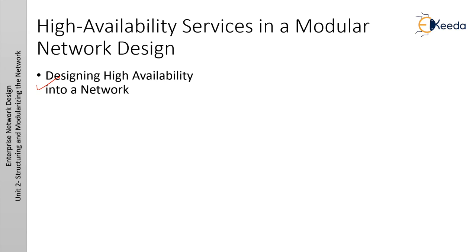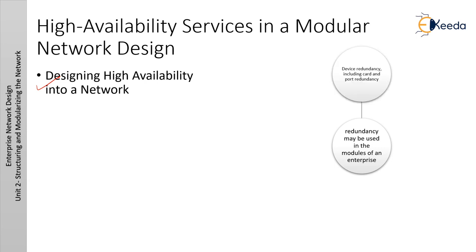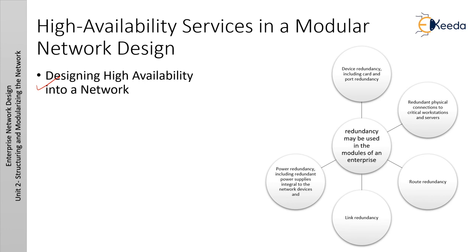Areas where redundancy may be used in enterprise modules include: device redundancy (card and port redundancy), redundant physical connections to critical workstations and servers, route redundancy, link redundancy, and power redundancy (including redundant power supplies integral to network devices and redundant power to the building physical plant). The key requirement is that redundancy provides alternative paths for mission-critical applications. Simply making the backbone fault-tolerant does not ensure high availability — if communication on a local segment is disrupted, that information will not reach the backbone end-to-end. High availability is possible only when redundancy is deployed throughout the network.